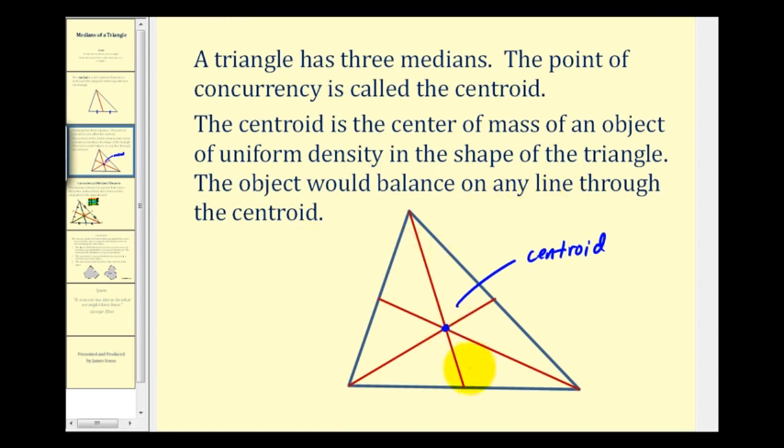The way I like to think about this is, if this triangle was a piece of sheet metal with uniform density, and you place it horizontally. Let's say this was the centroid. If you put the tip of a rod on the centroid underneath this piece of sheet metal, it would balance perfectly horizontally on that rod.